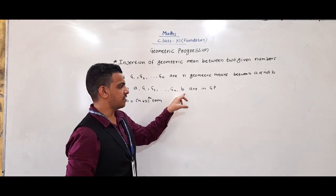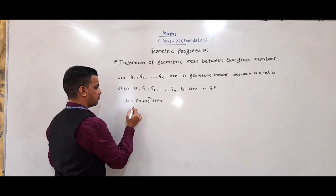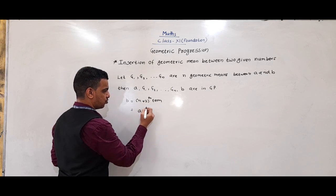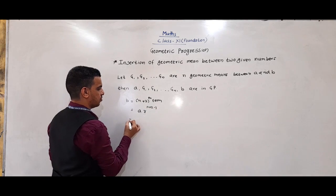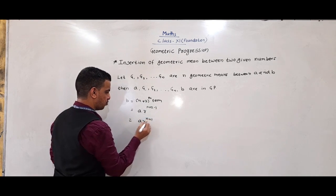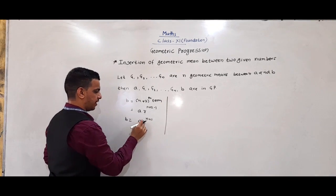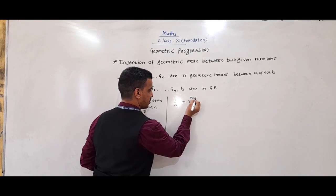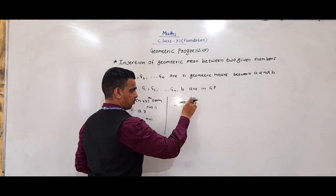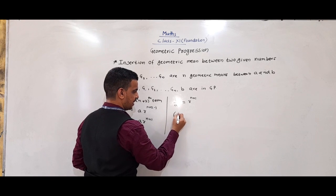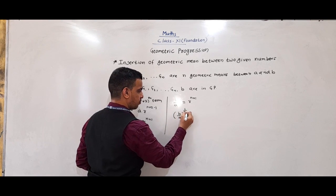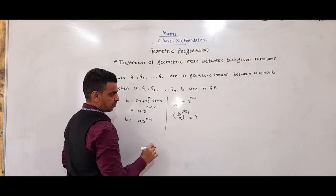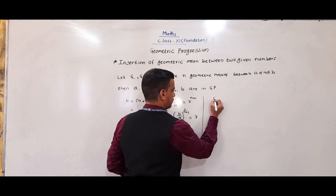R is the common ratio of the GP. The (n+2)th term is A·R^(n+1) = B. So B/A = R^(n+1), and raising both sides to the power 1/(n+1) we get R = (B/A)^(1/(n+1)).